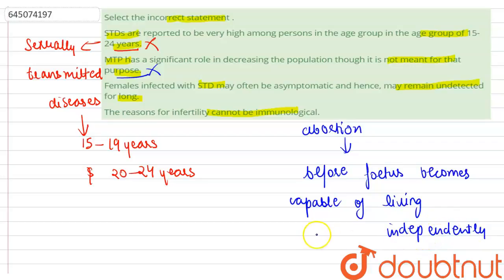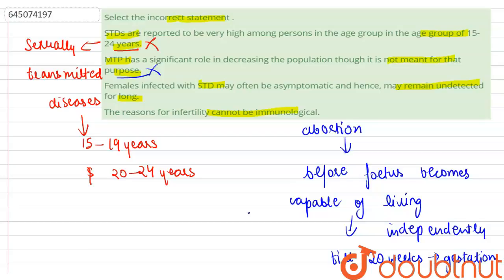Medical termination of pregnancy is legal up to 20 weeks of gestation. Pregnancy termination performed in the first trimester is safer than in the second trimester. It is illegal to perform MTP for the purpose of determining the sex of the child, as the Government of India has banned sex determination. MTP can contribute to decreasing the human population, but it is not meant for that purpose — it is meant for cases where there are complications in the pregnancy.